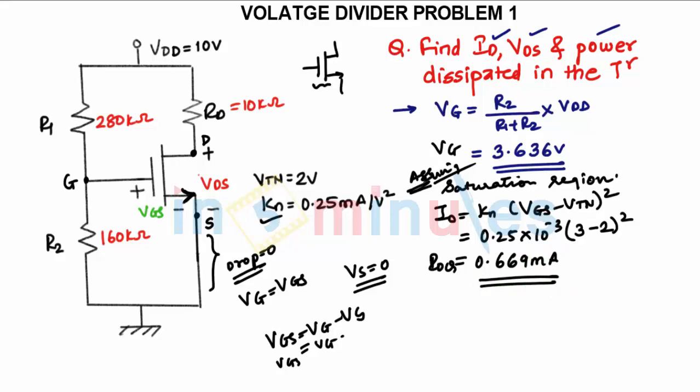Now we can find VDS. VDS we can find by applying KVL in the output loop. We can write VDS as VDD minus ID into RD. Since there is no resistance in the source, we are restricting to ID into RD. So when you substitute the values, you will get it as 3.331 volts. So we have got the value of VDS.